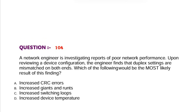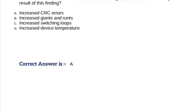Question: A network engineer is investigating reports of poor network performance. Upon reviewing a device configuration, the engineer finds that duplex settings are mismatched on both ends. Which of the following would be the most likely result of this finding? Option A, Increased CRC errors. Option B, Increased giants and runts. Option C, Increased switching loops. Option D, Increased device temperature. Correct answer is Option A.